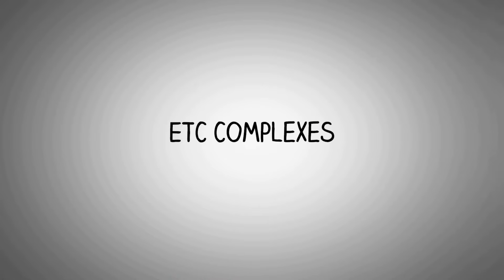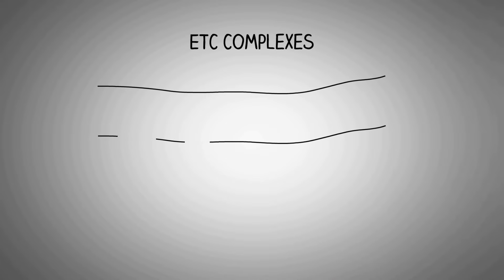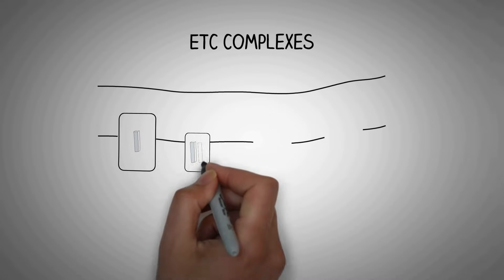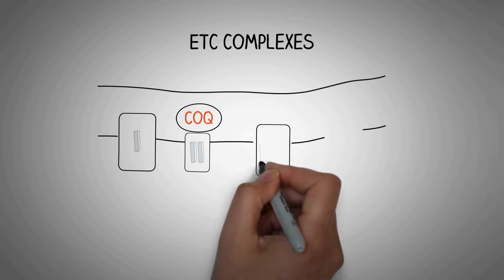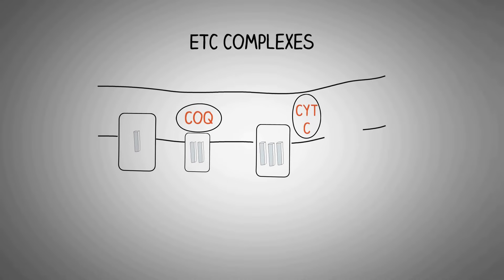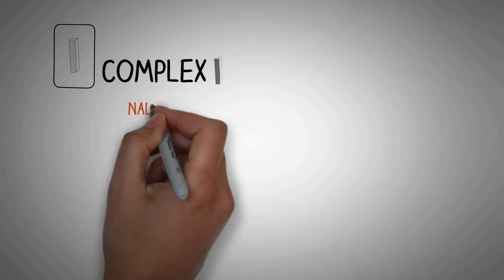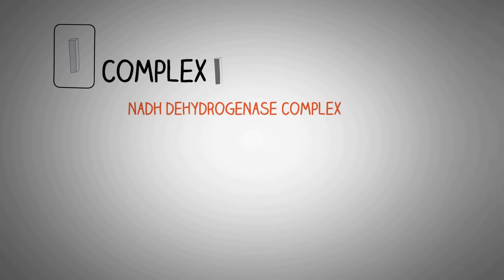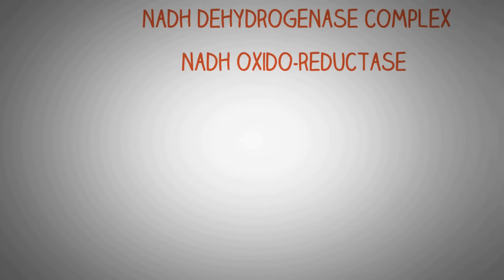Now let's talk about the various electron transport chain complexes. The inner mitochondrial membrane contains these electron transport chain complexes, numbered from 1 to 4 in Roman numerals. In addition to all 4 complexes, there are also 2 additional prosthetic groups called coenzyme Q and cytochrome C. The complex 1 of the electron transport chain is named as NADH dehydrogenase complex, also known as NADH oxidoreductase.